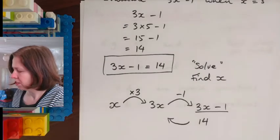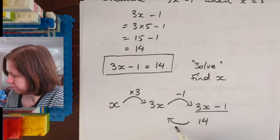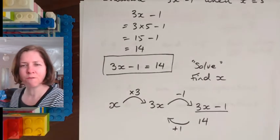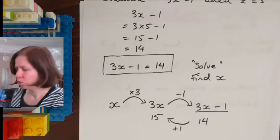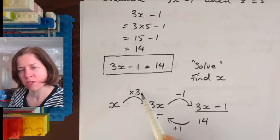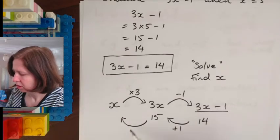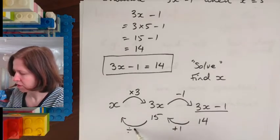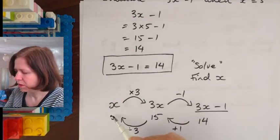So what I'm going to do is the inverse operation of minus 1 and I'm going backwards from 14. So the inverse operation of minus 1 is plus 1. So if I take 14 and then add 1 I'm going to get 15. What's the inverse operation of times 3? Write it down here on the arrow. You should have written divided by 3.